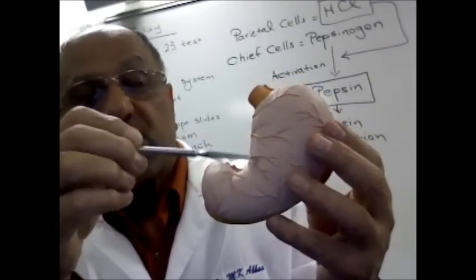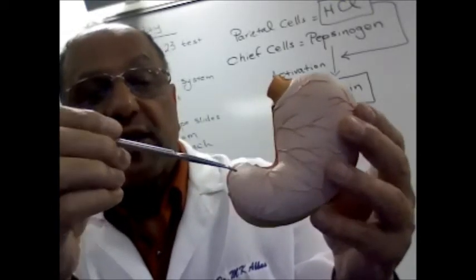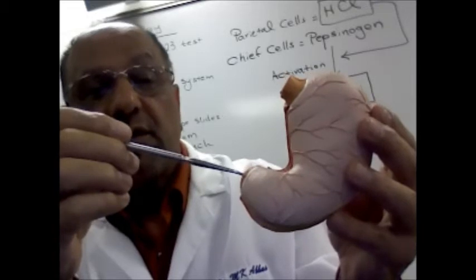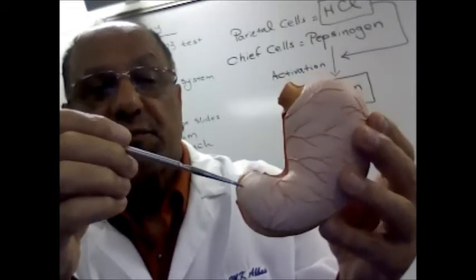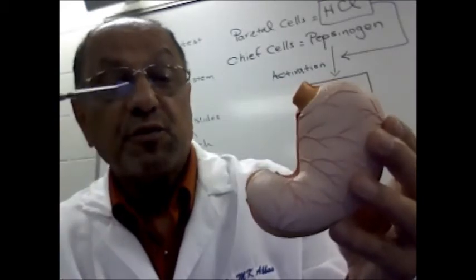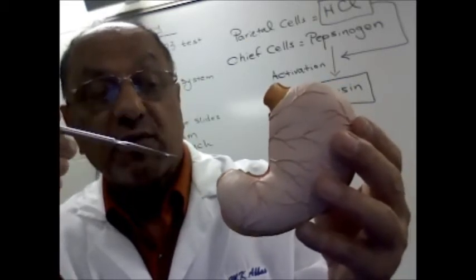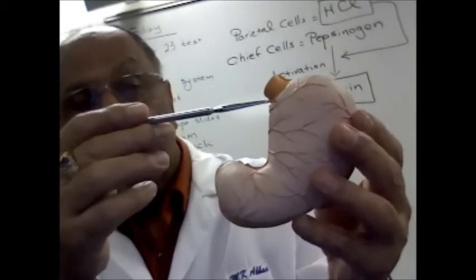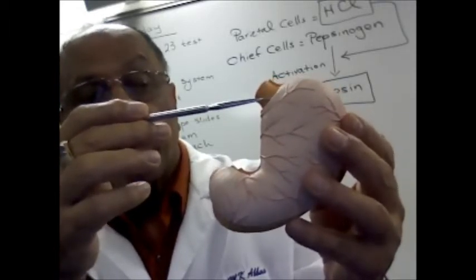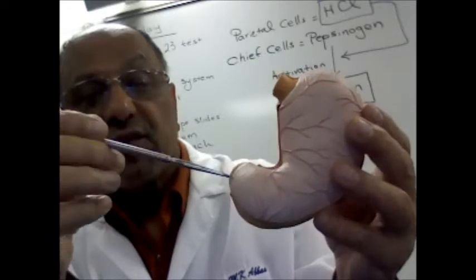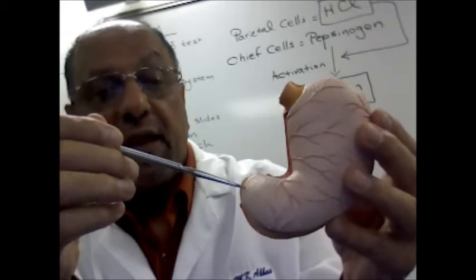The most prominent portion of the stomach is known as the body of the stomach, and then the narrow area at the end of the stomach is known as the pylorus. There are also two sphincters associated with the movement of food in and out of the stomach. One sphincter is near the esophagus and that's the cardiac sphincter.